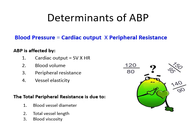Now we'll discuss the determinants of arterial blood pressure. The equation is: arterial blood pressure equals cardiac output times total peripheral resistance. Cardiac output is affected by stroke volume, heart rate, blood volume, and circulatory capacitance. Total peripheral resistance is affected by blood viscosity, the length of the blood vessel, the diameter of the blood vessel, and the elasticity of the blood vessel.